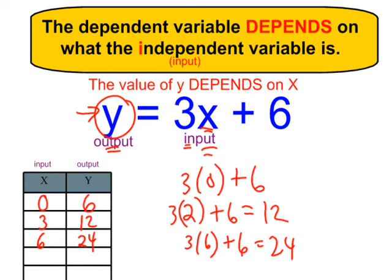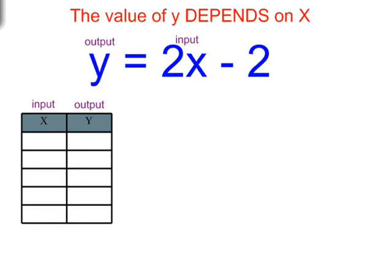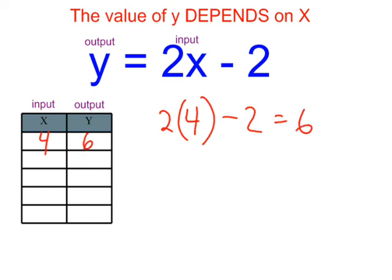Let's look at another equation. We have two variables again — y and x. They don't have to be y and x; you could use any letters you wanted. Let's give x a value of 4. 2 times 4 is 8, and 8 minus 2 is 6. So the value of y would be 6. What's the value of y? Well, it depends — it depends what x is.